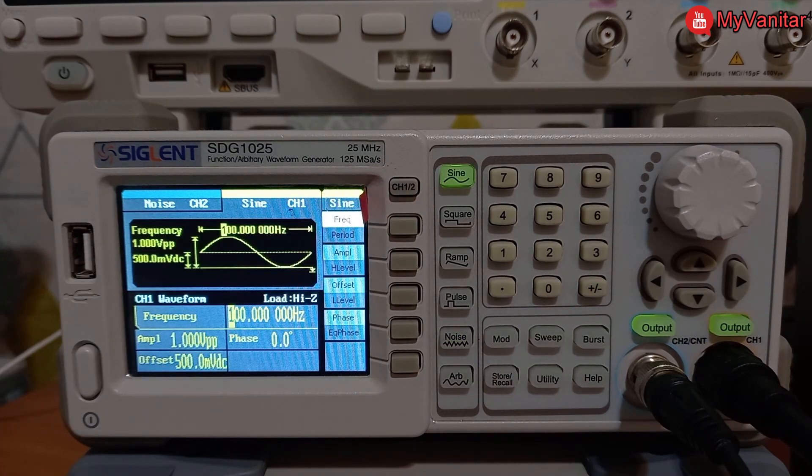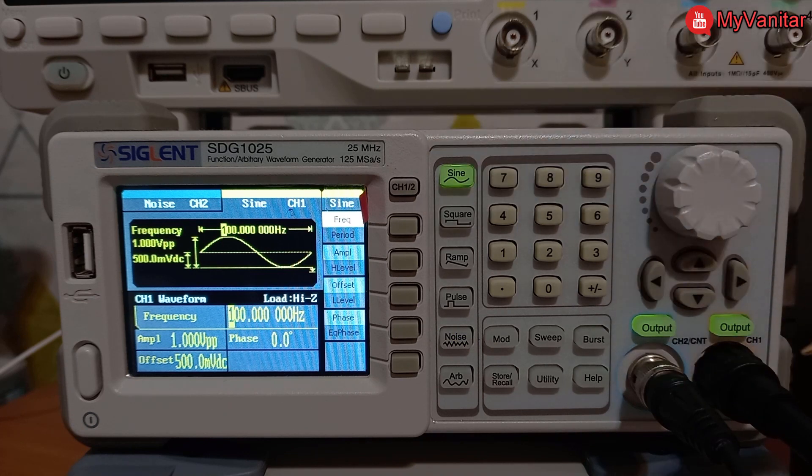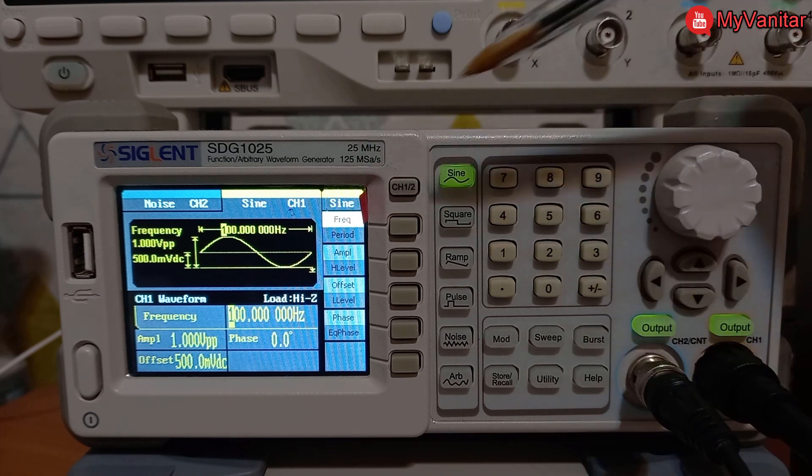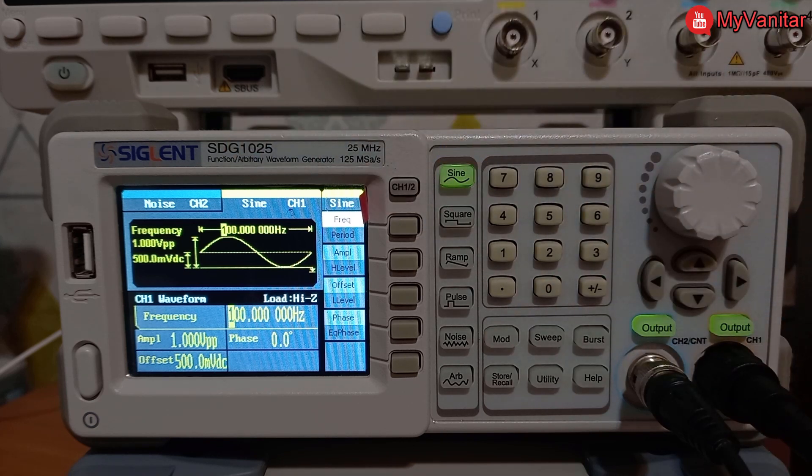This is a discontinued model from Siglent. In the newer ones, you can combine both channels and you don't need to use both outputs. You can combine the noise and signal in one output. Let me go and capture the oscilloscope screen.